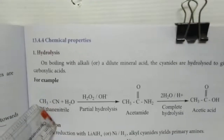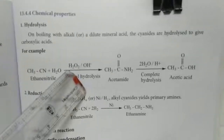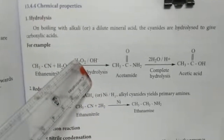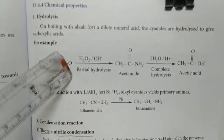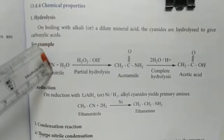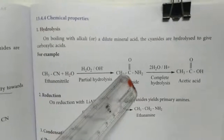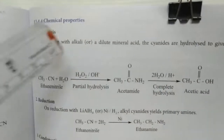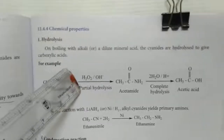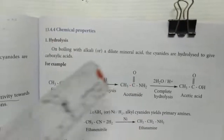For example, CH3CN (ethanenitrile) when it undergoes hydrolysis in the presence of hydrogen peroxide and a basic medium (OH-), it undergoes partial hydrolysis to form amides. Further hydrolysis gives acetic acid — that is the basic concept. So cyanide or nitrile compounds when they undergo hydrolysis give amide first, and further hydrolysis gives carboxylic acid.